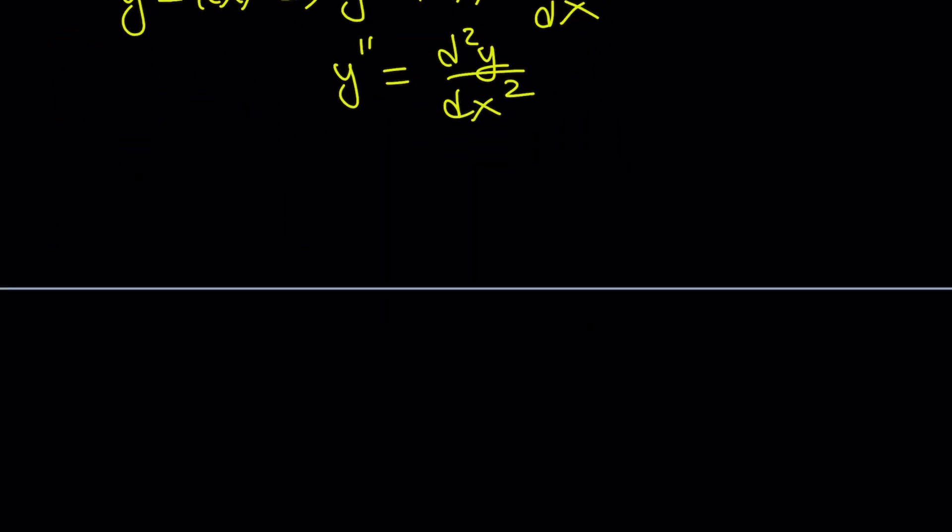We have x squared y double prime equals y. First of all, I want you to pay attention to both sides. On the right-hand side, we have x squared on the left and the second derivative. So the powers, or the order of the derivative, kind of match up. And on the right-hand side, we have no derivative and no power of x, which is x to the power of 0. So that kind of matches up. We'll consider that a little later. But let's go ahead and take a look at it from a different angle.